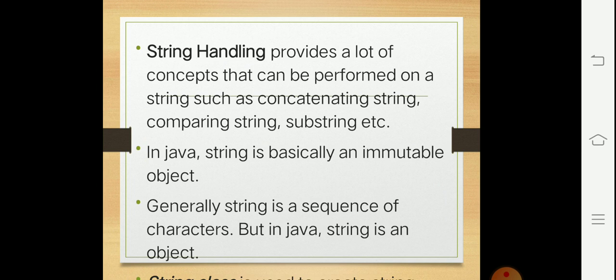In Java, string is basically an immutable object. Immutable means we cannot change the reference of that object, and mutable means that object can be modifiable. Generally, as I have told you, string is a sequence of characters, but in Java, string is an object.